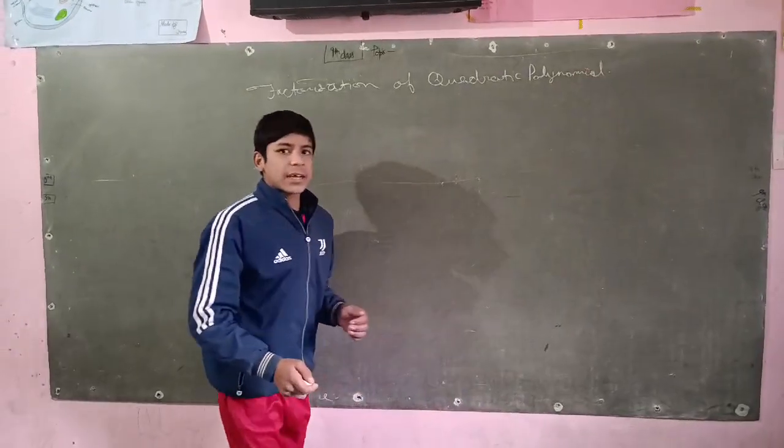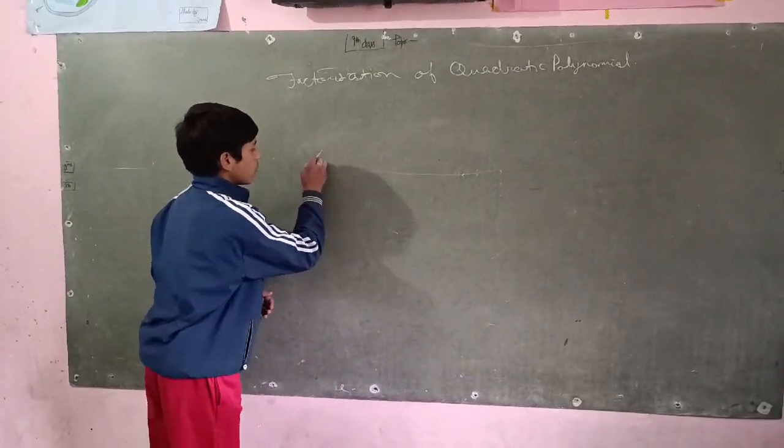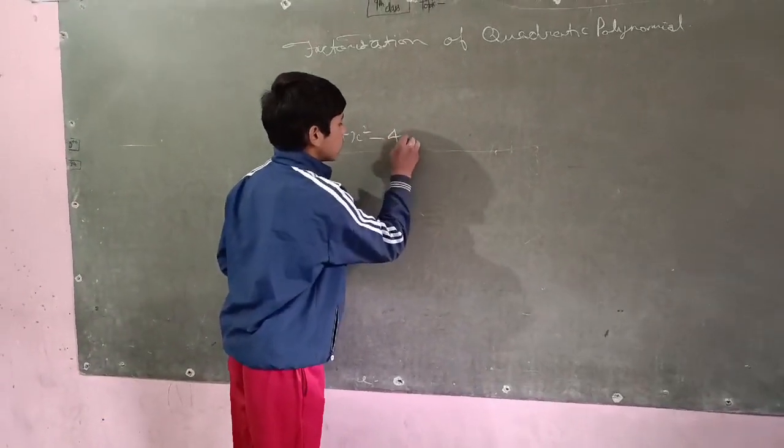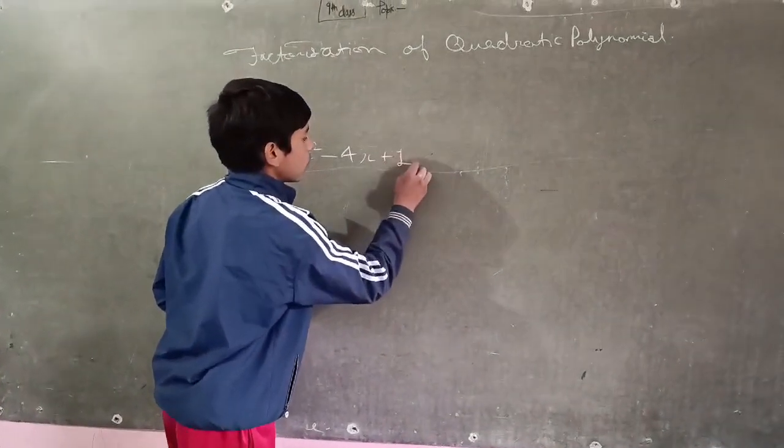Now we shall take one example, 4x square minus 4x plus 1.